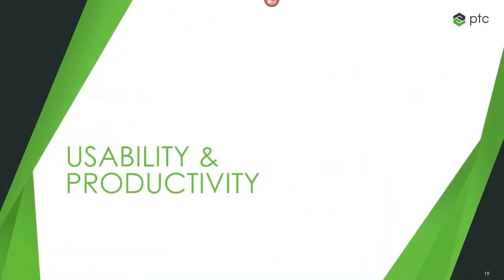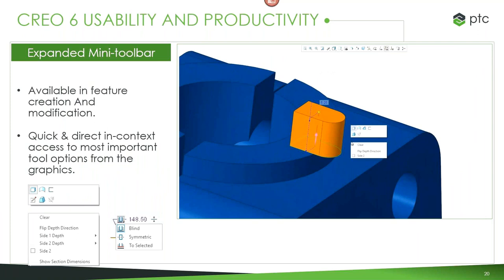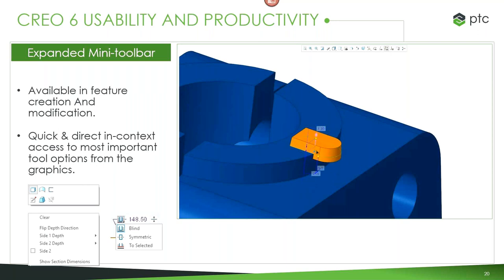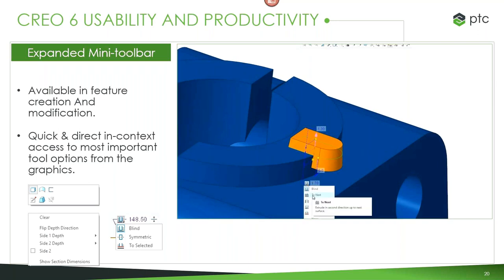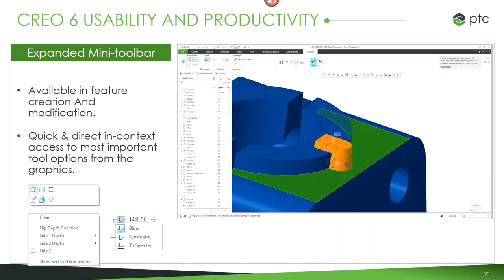Now we can move on to usability and productivity enhancements — broad changes touching separate aspects of Creo that you'll notice when working within Creo Parametric 6. One you'll definitely notice is the expanded mini toolbar. Anytime you click on anything within Creo, you get this mini toolbar giving quick access to important design options. You can stay in the model and don't have to rely as much on the ribbon. All different feature options — going up to a surface, extruding in a different direction — are done with left clicks right on top of the model.